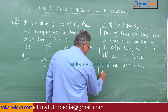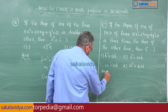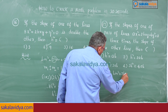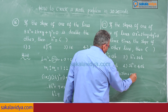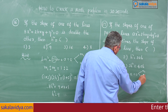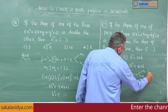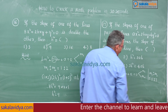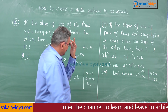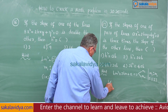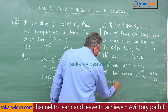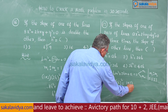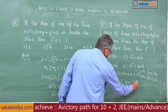The hint is: Bm² + 2hm + A has two roots m1 and m2, where m1:m2 = 1:3. You remember the shortcut like this: (1 × 3) × (2h)² = (1 + 3)² × B × A.